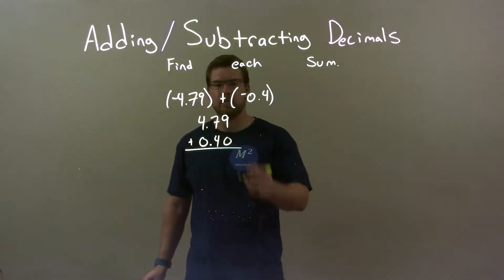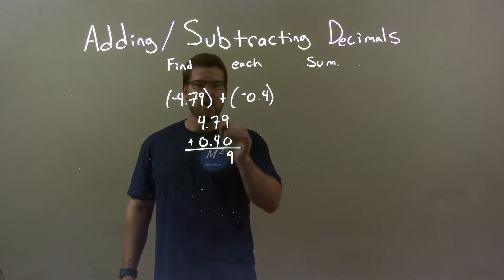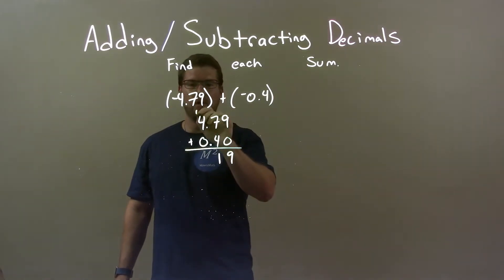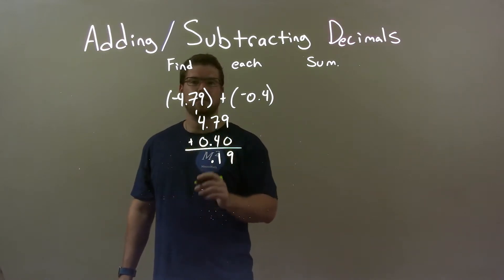I'm going to add these two. So, 9 plus 0 is 9. 7 plus 4 is 11. We carry the 1. Make sure the decimal place goes there. 1 plus 4 is 5 plus 0 is 5 still.